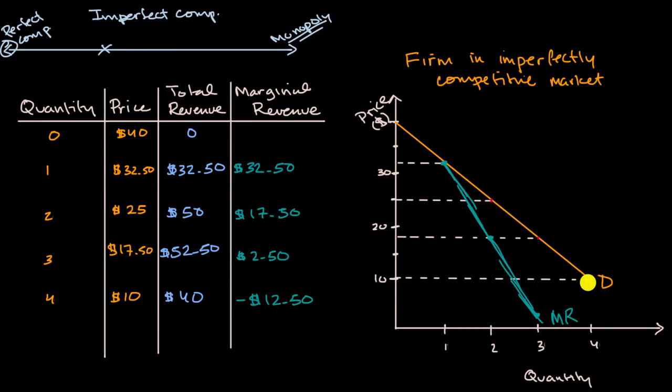And so it's going to have a downward sloping demand curve. And because of that downward sloping demand curve, you are also going to have a downward sloping marginal revenue curve. And that marginal revenue curve is actually going to be downward sloping at a steeper rate.